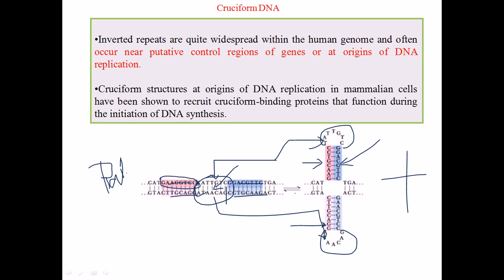Cruciform structures are very important at the origin of DNA replication. We can find more cruciform structures at the start point of DNA replication in mammalian cells. They have been shown to recruit different types of proteins called cruciform binding proteins to start the replication process. Cruciform DNA is found near positive control regions of a gene and at the origin of DNA replication.